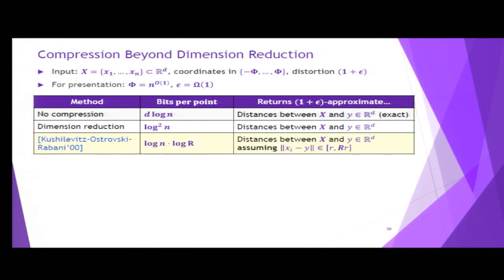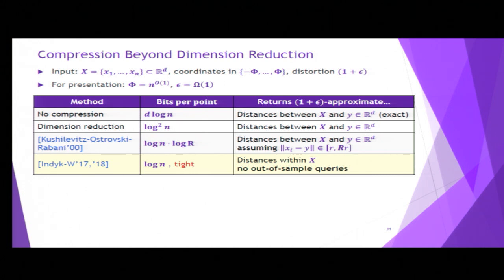The other related work is our own from SODA 17, where we showed that you can use only log n bits per point, which is also optimal. But this only lets you estimate distances between the data points. You need to know all the points in advance while you're computing the sketch. You cannot handle incoming queries. And this is what we fix in this work. We get a sketch that uses log n bits per point and can handle approximate nearest neighbor queries as defined earlier. This is the first improvement for this problem in the space bound over Johnson-Lindenstrauss.